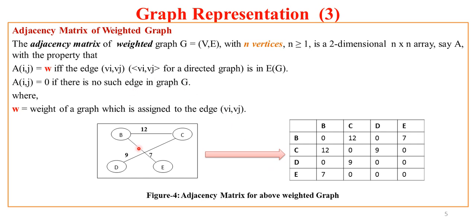For a weighted graph, assume a graph with four vertices B, C, D, E that are connected with weighted edges. Here A[i][j] = W, where W is the weight of the edge from vertex i to vertex j. For edge B to C with weight 12, that entry is marked 12 in the matrix. So instead of 1 and 0, we specify the weight W, or 0 if there is no connection. Similarly, edge D to C has weight 9, so that entry is marked 9.